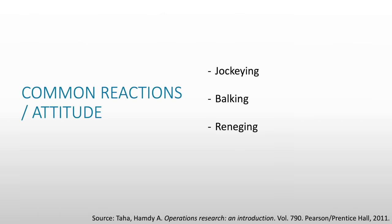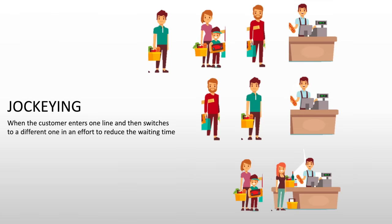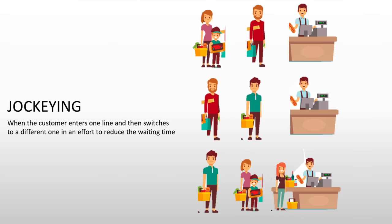There are three common reactions or attitudes for each customer or member of the queue. It can either be jockeying, balking, or reneging. Jockeying is when the customer enters one line and then switches to a different one in an effort to reduce the waiting time. For example, the guy in the green shirt comes in and decides to go to queue number one, then sees that queue number three has fewer people, so he goes there. That is called jockeying.